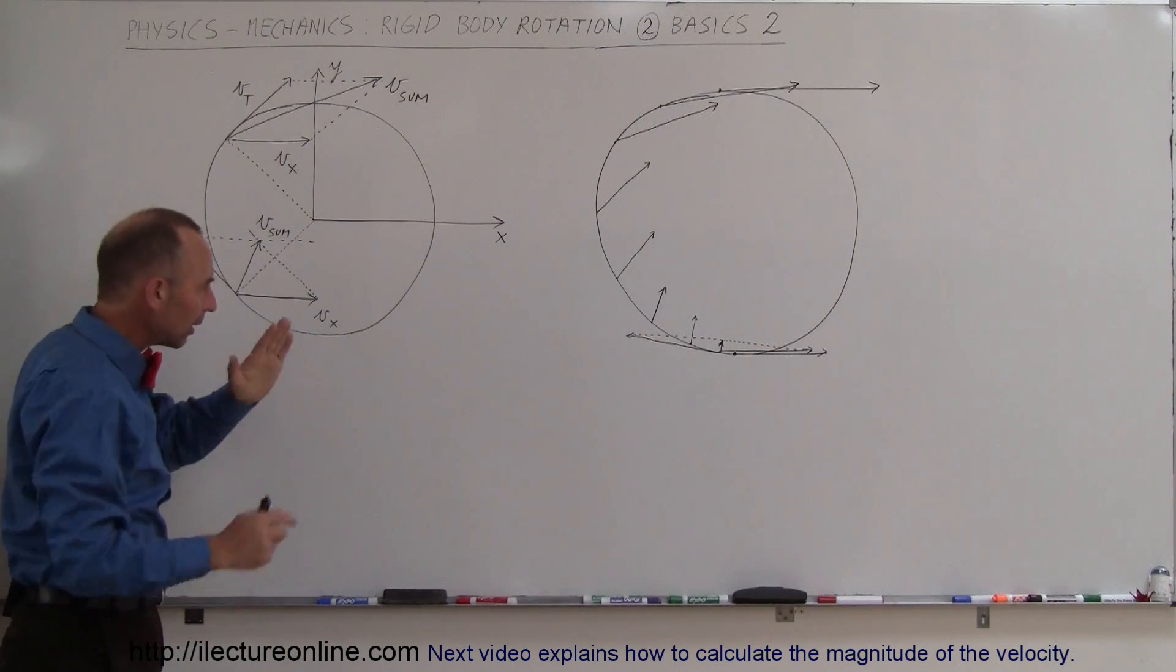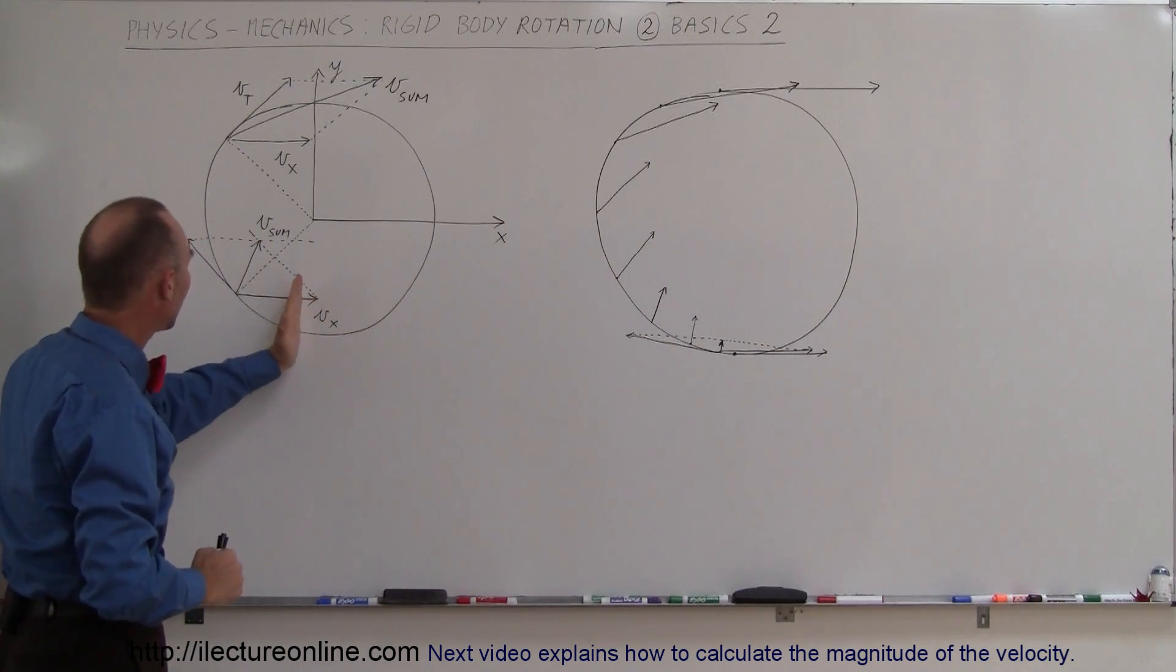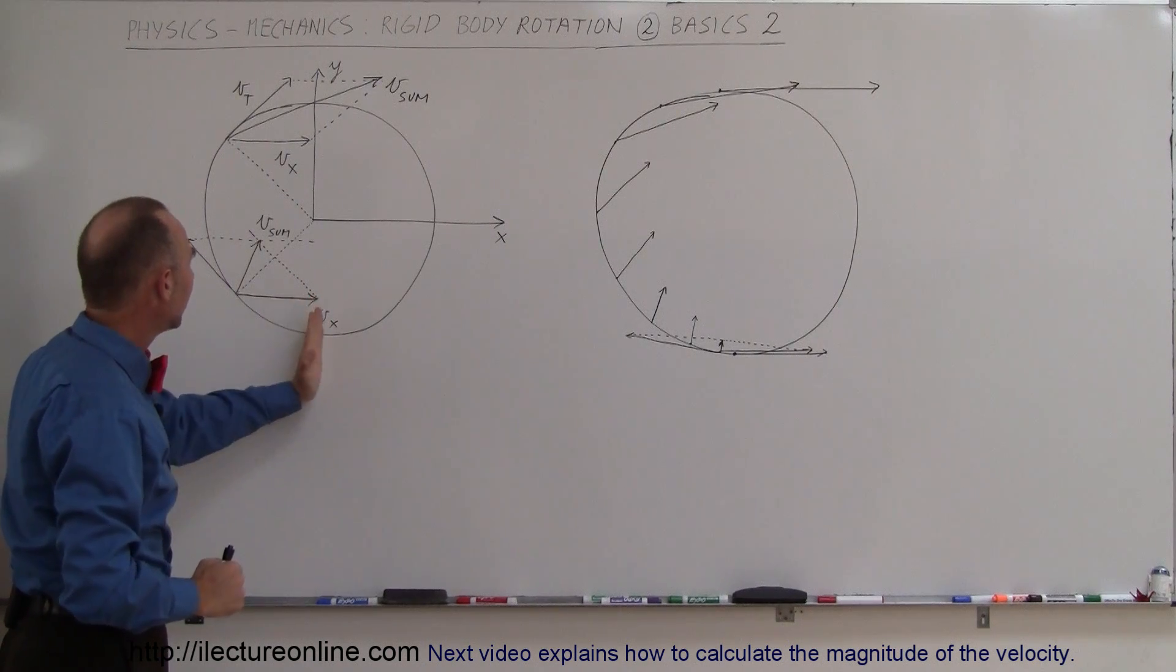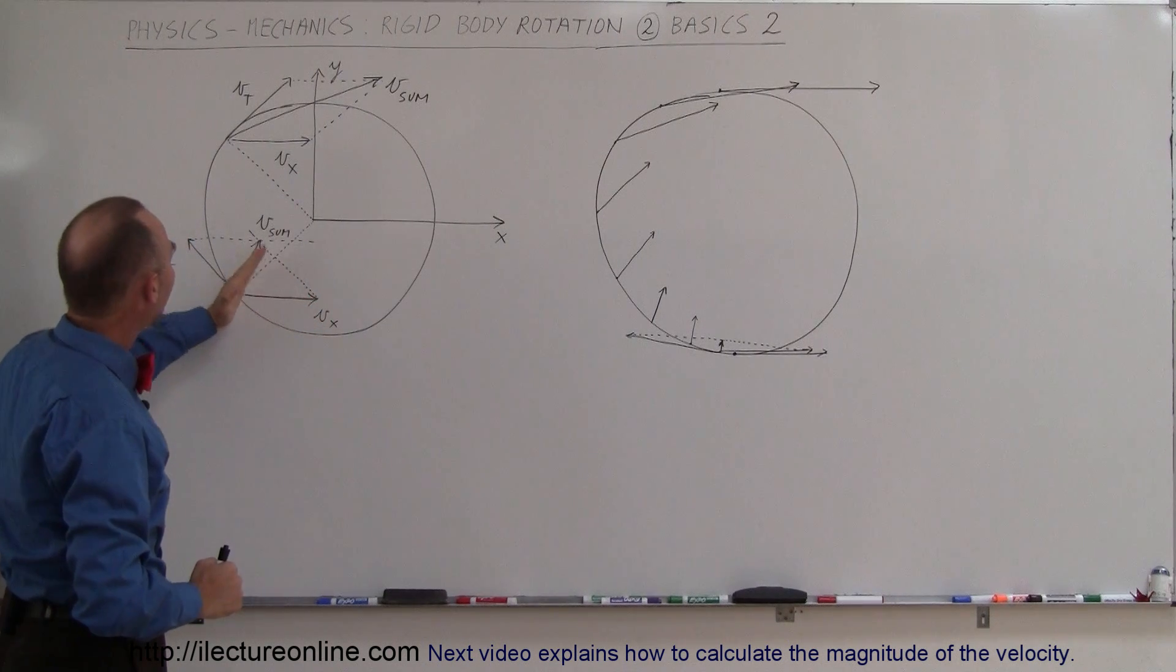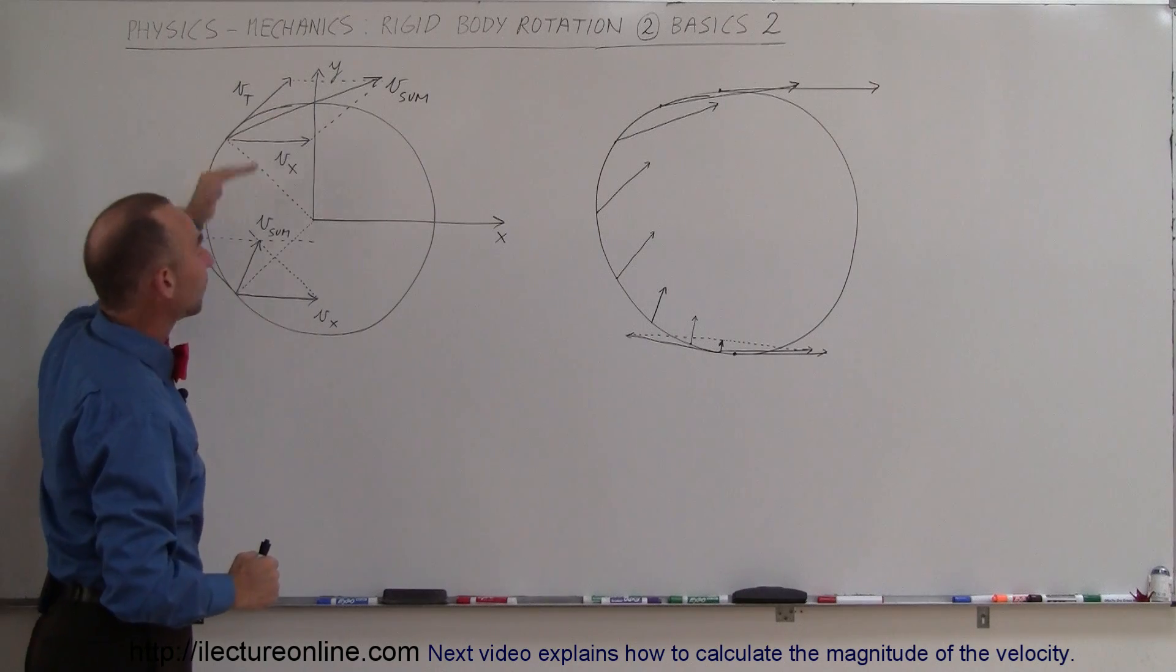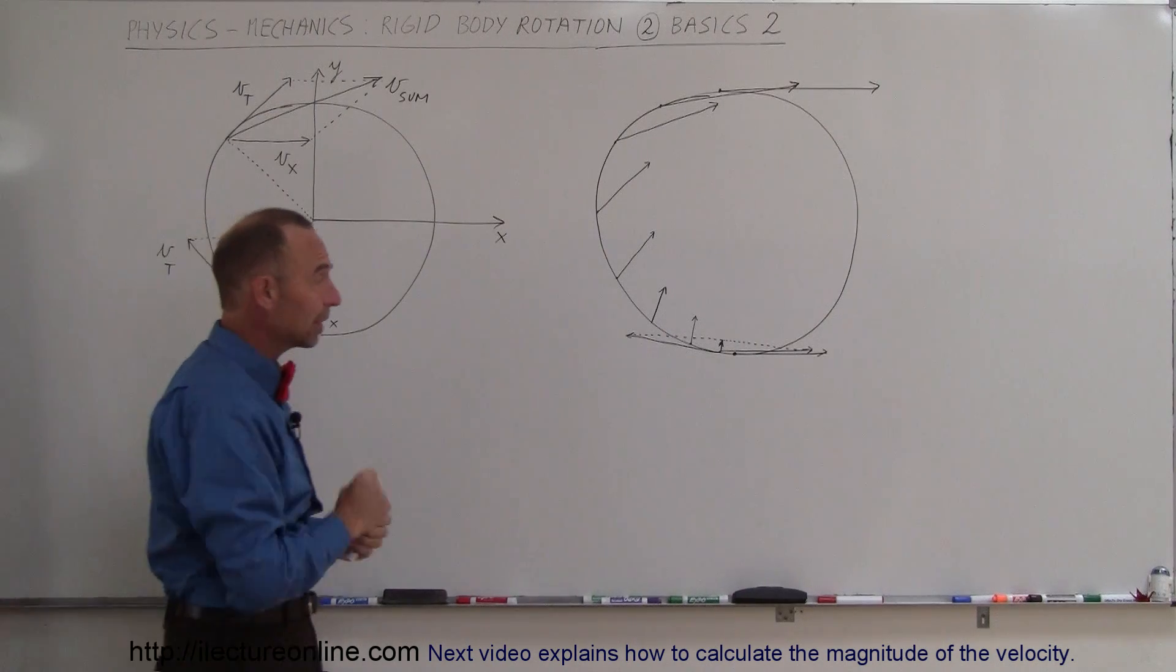Notice that it is a lot greater in magnitude than it was over here. So that magnitude is increasing as we're going around the tire, and the direction is also always changing from being zero here, then there's an upward direction, and then it changes slowly like that.